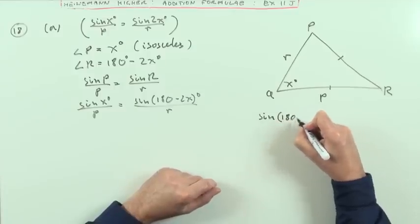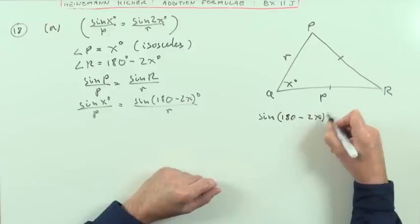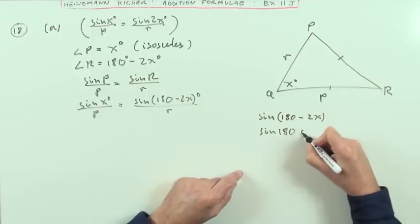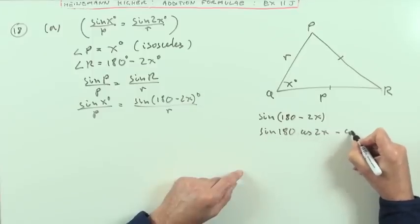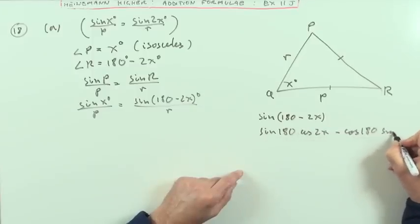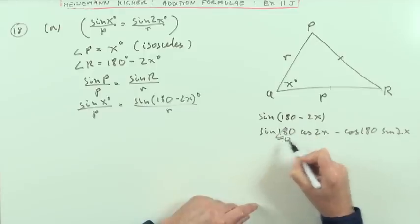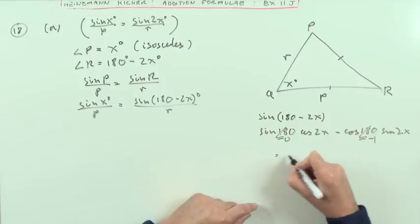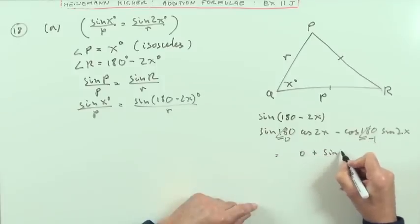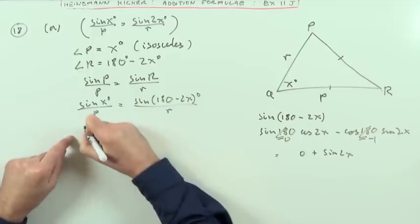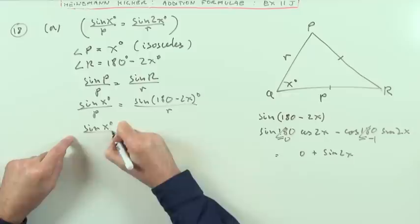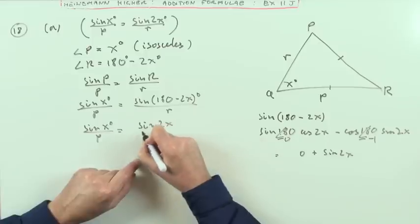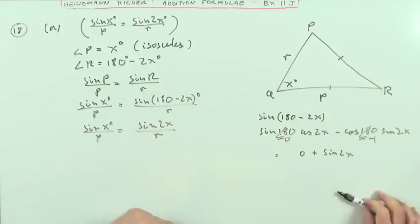But if I was to put it all out, it would be like this: sine 180 minus 2X. Sine 180 cos 2X minus cos 180 sine 2X. Sine of 180 is 0, cos of 180 is negative 1, that comes to nothing, there's plus 1, so that just comes to nothing plus sine 2X. So I can safely say, what I knew all along, that that just equals sine 2X over R, and that was the first bit done.